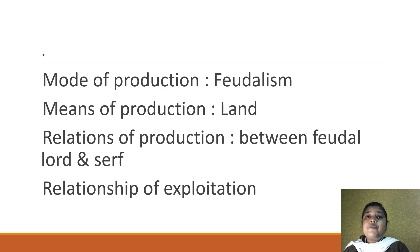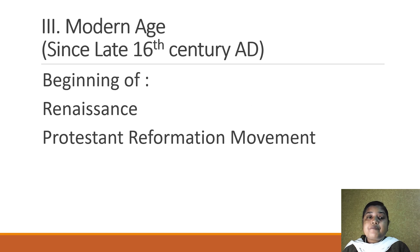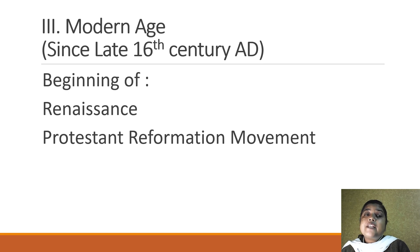As we find that feudalism was disappearing from European society and a new mode of production was emerging, we say that we enter into the modern age in Europe. The modern age also saw the beginning of the Renaissance and the Protestant Reformation movement. As mentioned, the middle ages were characterized by darkness, so the Renaissance and Protestant Reformation brought the ideals of humanism and realism.